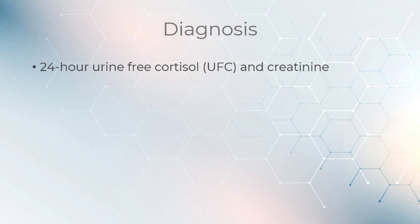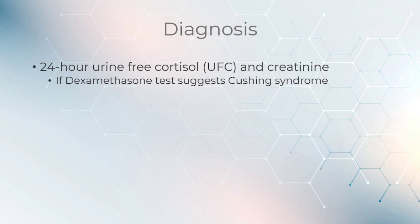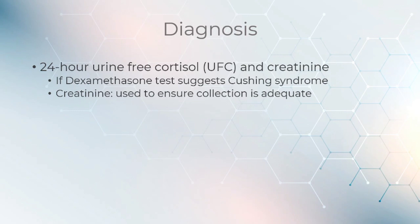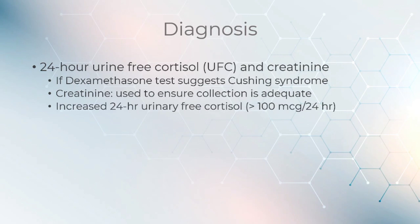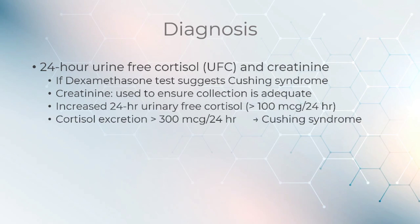24-hour urine-free cortisol and creatinine measurements can be done if the dexamethasone test suggests Cushing syndrome. Creatinine is used to ensure the collection is adequate, and an increased 24-hour urinary-free cortisol is present if it exceeds 100 mcg per 24 hours. A cortisol excretion greater than 300 mcg per 24 hours can be used to diagnose Cushing syndrome.